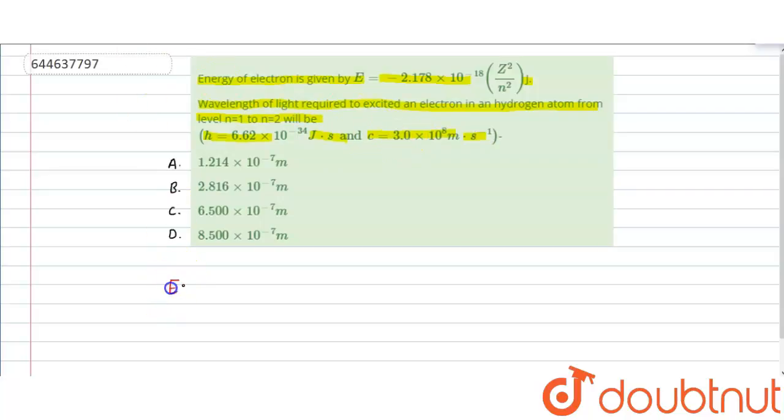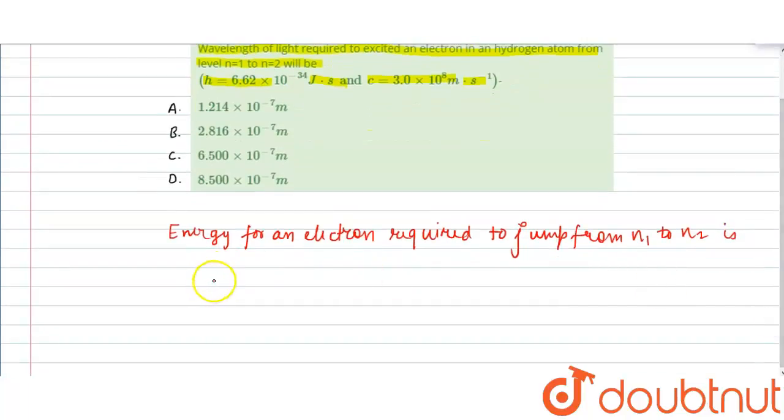Now, energy for an electron required to jump from n1 to n2 is given by the equation as delta E equals minus 2.178 times 10 to the minus 18, times (1 by n1 squared minus 1 by n2 squared) times z squared joules per atom.